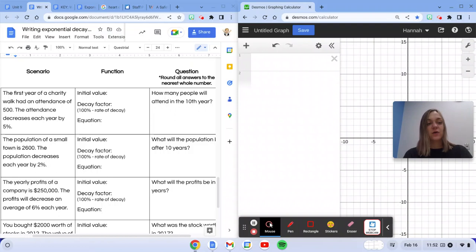So the first scenario is the first year of a charity walk had an attendance of 500. So the first year initial value is going to be 500. We know that this is the equation we're going to use. So y equals 500 times, I don't know what my decay factor is yet.